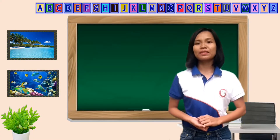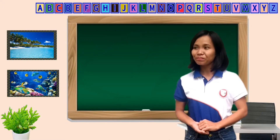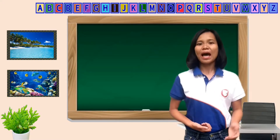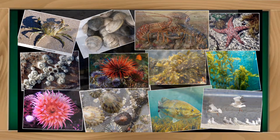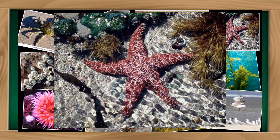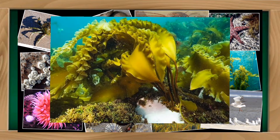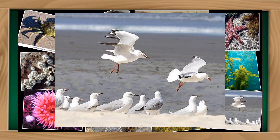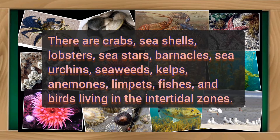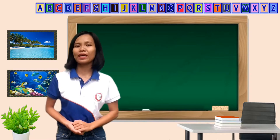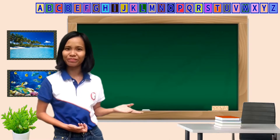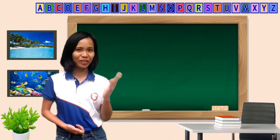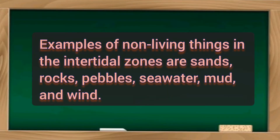What are the living organisms living in that area? There are crabs, seashells, lobsters, sea stars, barnacles, sea urchins, seaweeds, kelps, animals, limpets, fishes, and birds living in the intertidal zone. And what about the non-living things that we can find in the intertidal zone? Examples of non-living things in the intertidal zones are sand, rocks, pebbles, seawater, mud, and wind.